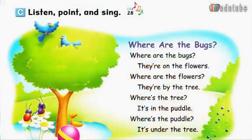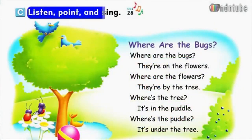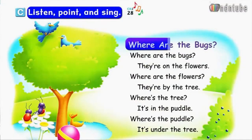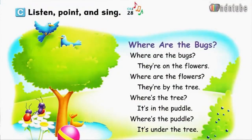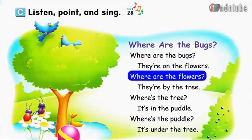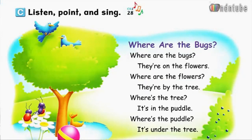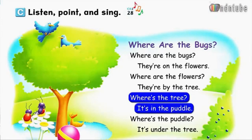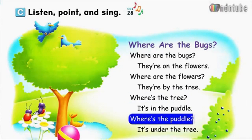Page 53. C. Listen and sing. Where are the bugs? Where are the bugs? They're on the flowers. Where are the flowers? They're by the tree. Where's the tree? It's in the puddle. Where's the puddle? It's under the tree.